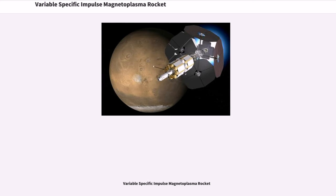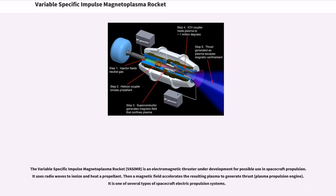The variable-specific impulse magnetoplasma rocket is an electromagnetic thruster under development for possible use in spacecraft propulsion. It uses radio waves to ionize and heat a propellant, then a magnetic field accelerates the resulting plasma to generate thrust.